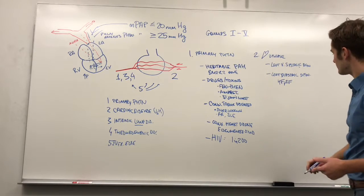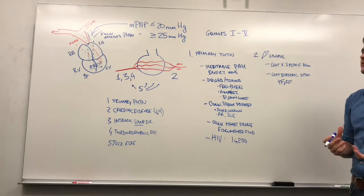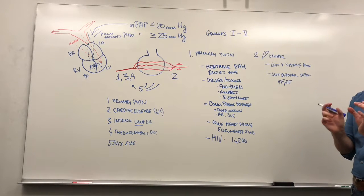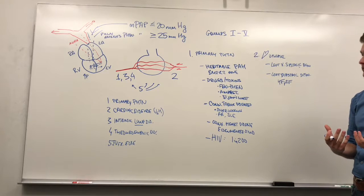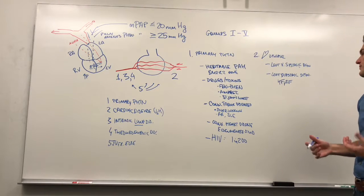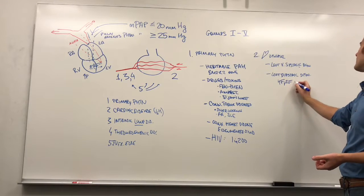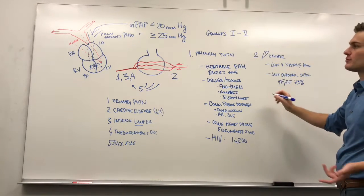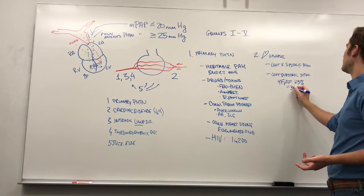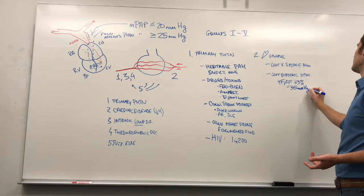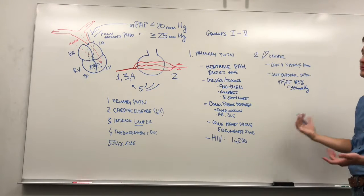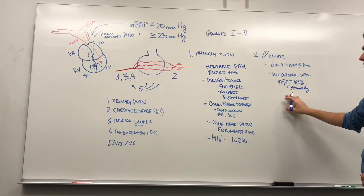In HFpEF, there's thickening of the walls and a preserved ejection fraction because the fraction of blood that comes out is still the same. But since the walls are so much thicker, there's a smaller quantity of blood that can fit inside the ventricle. Something like 83% of patients with HFpEF are going to have mean pulmonary arterial pressures of greater than or equal to 35 mmHg — that's huge. So roughly four in five people with HFpEF will have pulmonary hypertension. That's a really big one.